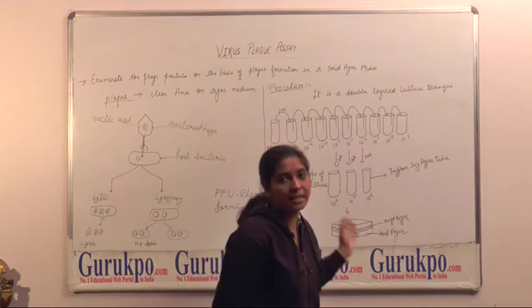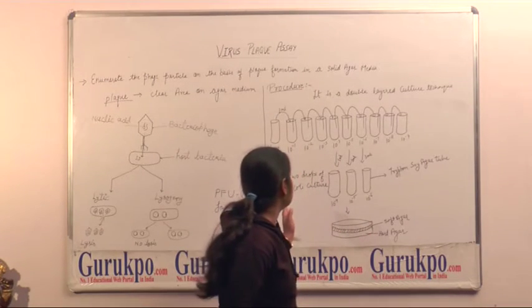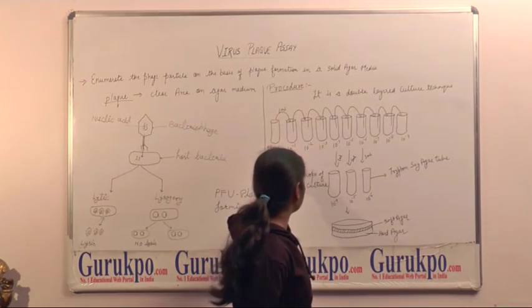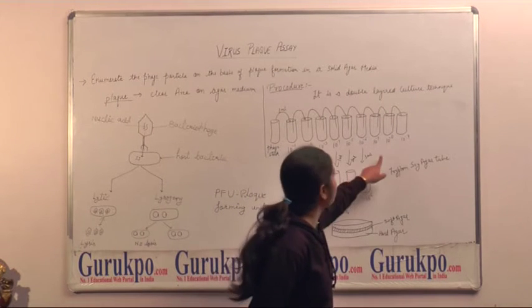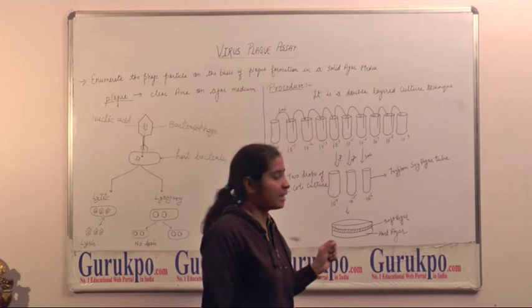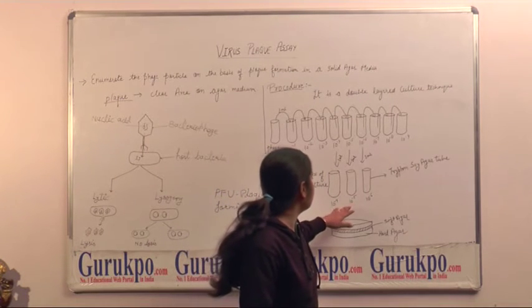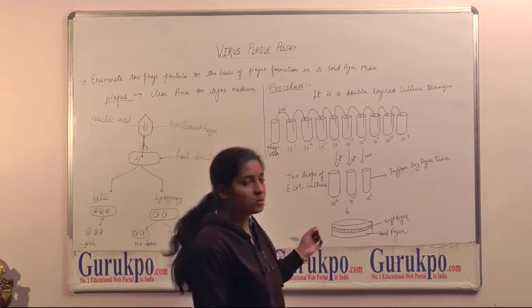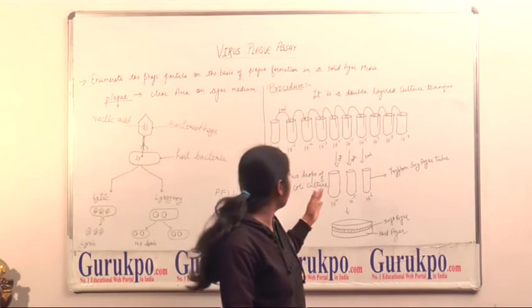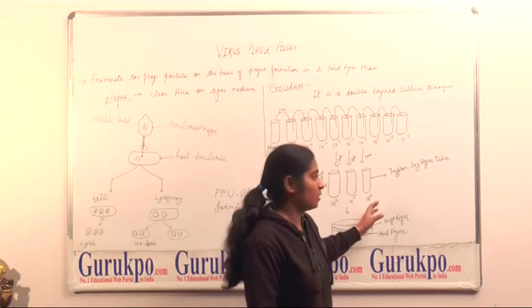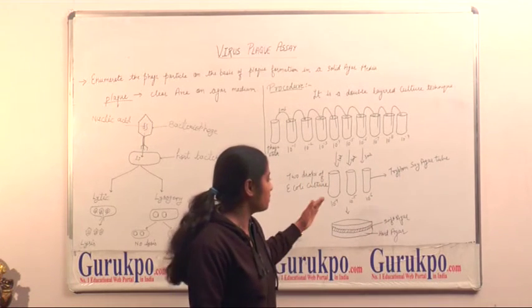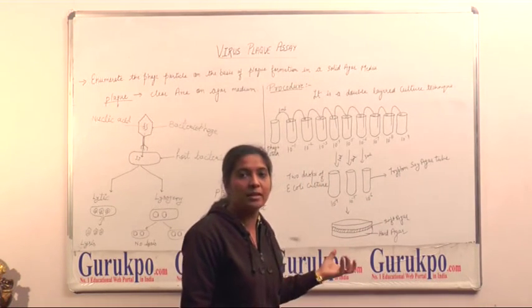And after that, we will prepare the serial dilution of the phage particle. Then, from the phage stock, we will dilute till 10 to the power minus 9 ml dilutions. And after that, we will add two drops of E. coli culture in phage dilutions. And then, this broth media was plated on the solid agar media.